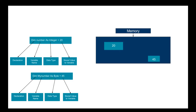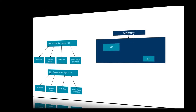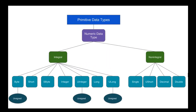Visual Basic offers two types of data types: primitive data types and non-primitive data types. The primitive data types are divided into three subcategories. We have numeric data types and miscellaneous data types. The numeric data type is further divided into two subcategories: integral and non-integral data types.